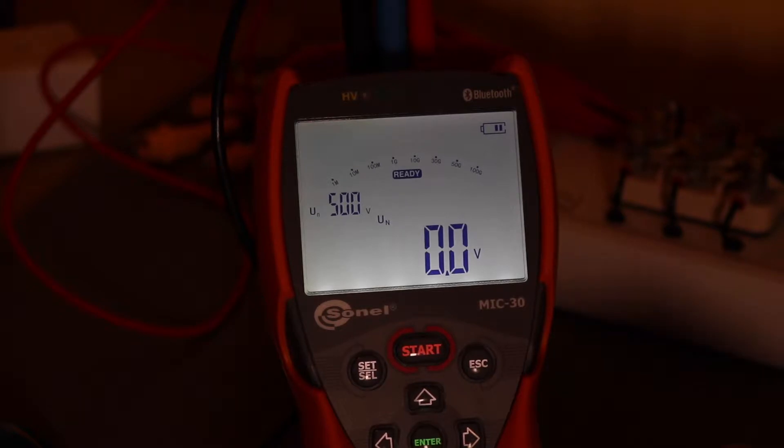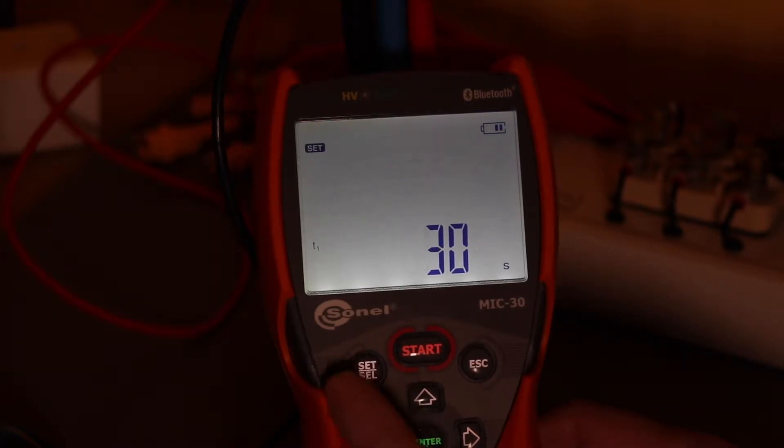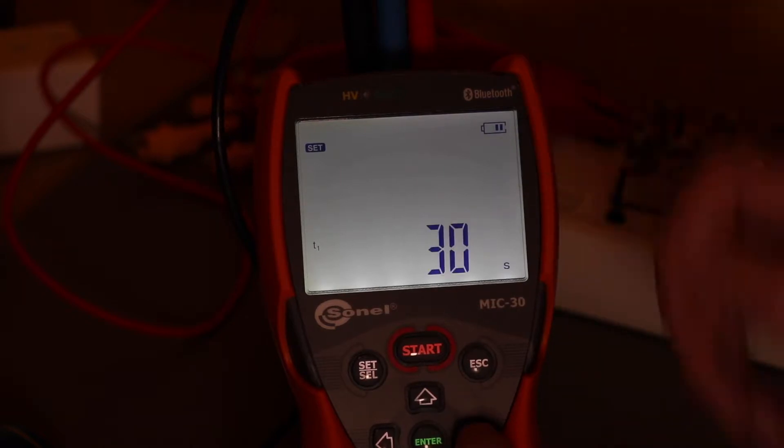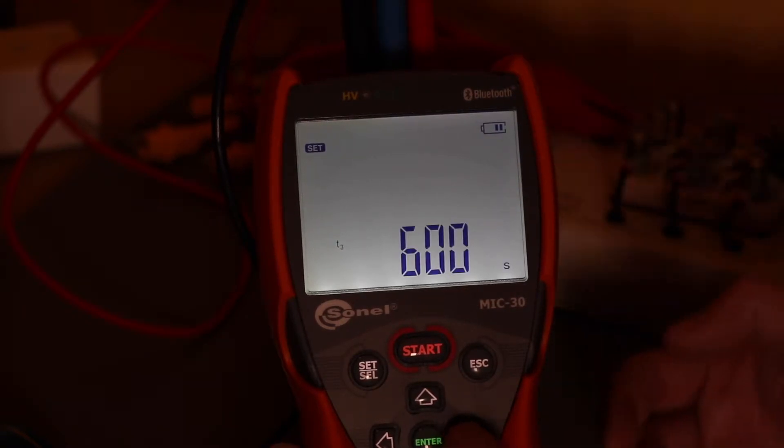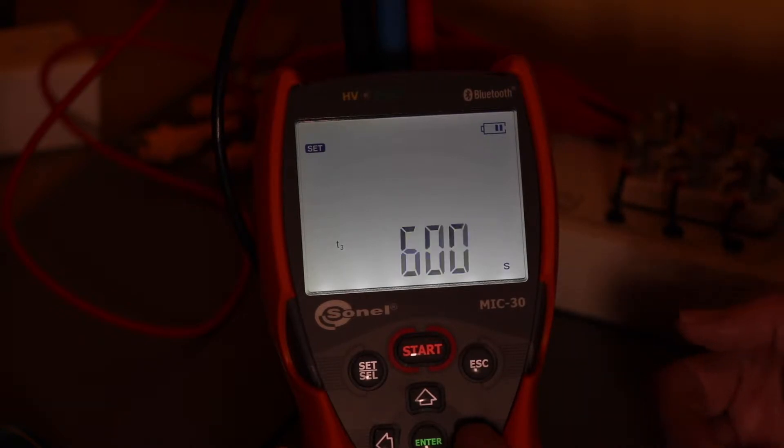First thing I'm going to do is set up the timestamps that this meter has, whereas the other insulation testers have specific DAR and PI buttons to select those ratios. This meter doesn't have that. What it does have, if I hit the set button, is three timestamps. So the first one is 30 seconds, 60 and 600. So that's set up for a standard DAR test and PI test.